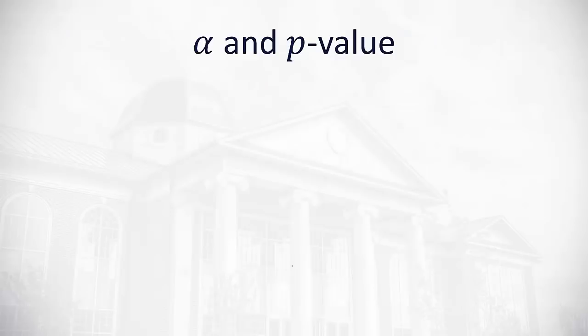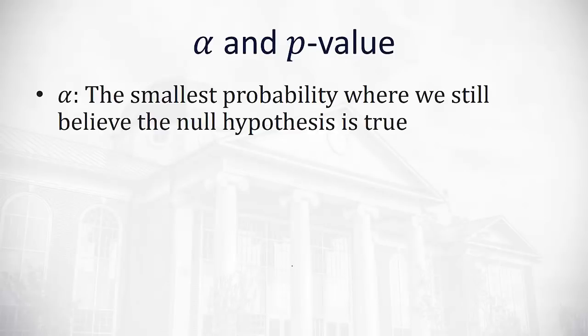Speaking of which, we're going to have two important values we're going to look at: alpha and what's called the p-value. Alpha is given to us in the problem. It is the smallest probability where we would still believe the null hypothesis is true. Usually alpha is 0.05 or 0.01, and as long as we have at least five percent or one percent probability, depending on the problem, that the null hypothesis is true, we're going to believe that.